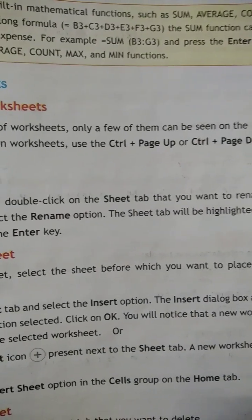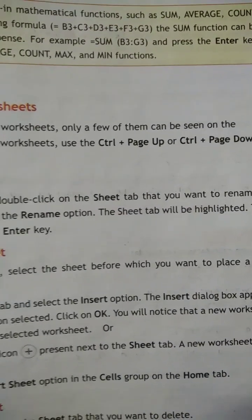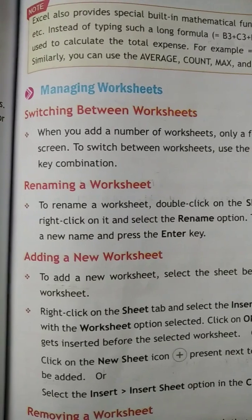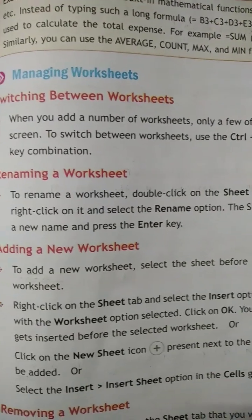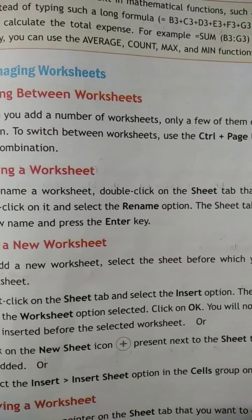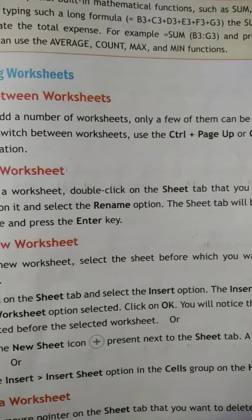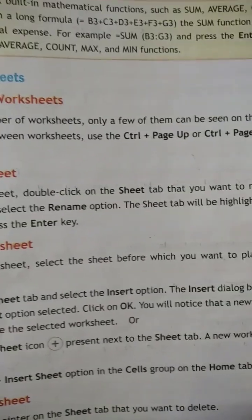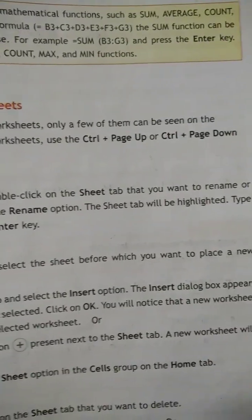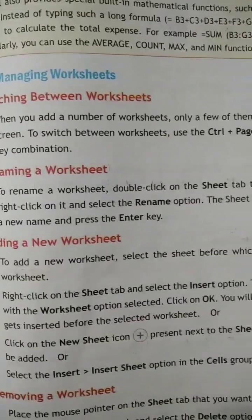To navigate between worksheets, pressing Control and Page Up gives us previous sheets, and Control and Page Down gives us later sheets. To rename a worksheet, double-click on the sheet tab that you want to rename, or right-click on it and select the Rename option.